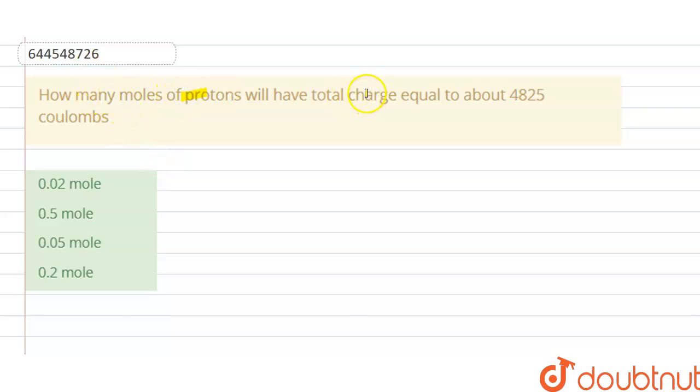how many moles of protons will have total charge equal to 4825 coulombs. A, B, C, D options are given here, so we have to choose the correct option.